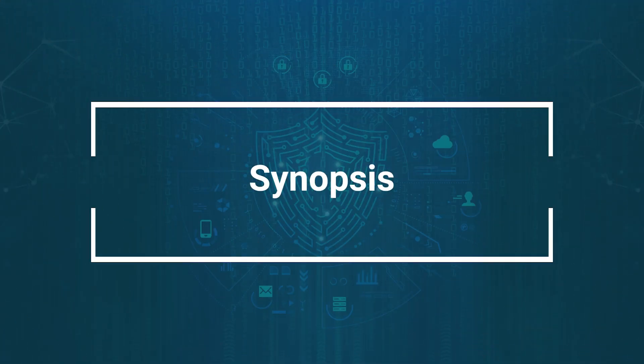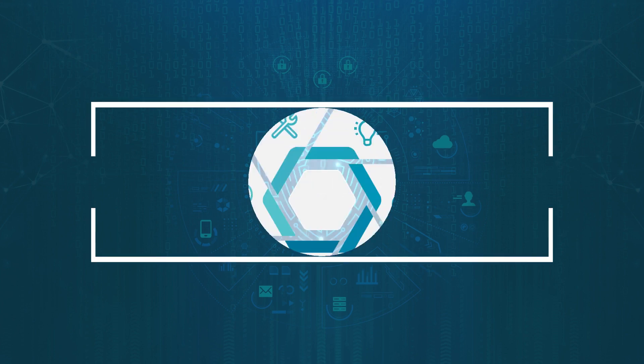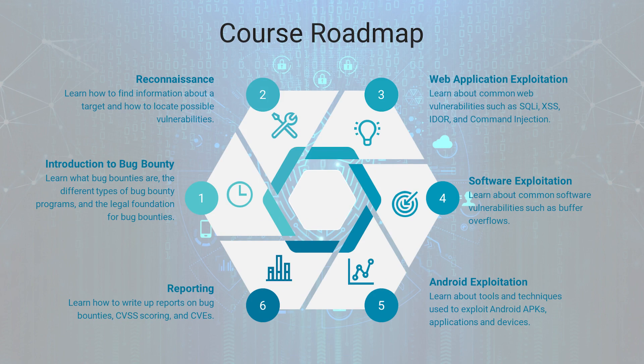Let's discuss a synopsis of the course, starting with our course roadmap. We're going to study a variety of different areas of the bug bounty process. First, I'm going to start by giving you a general introduction to bug bounties — what they are, the different types you'll come across, and what sort of legal and ethical considerations we should have when we participate in bug bounty programs. Once we have that, we'll move on to reconnaissance, which teaches us about how to find possible vulnerabilities inside of a target.